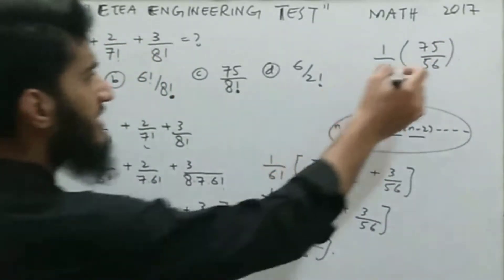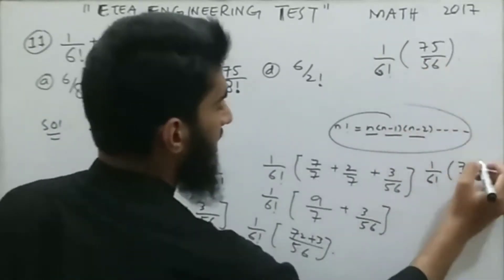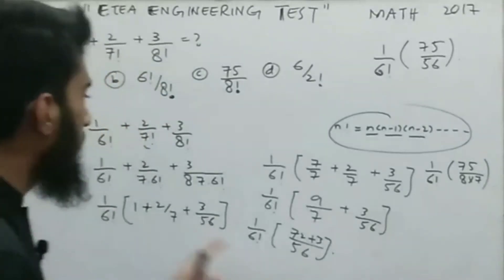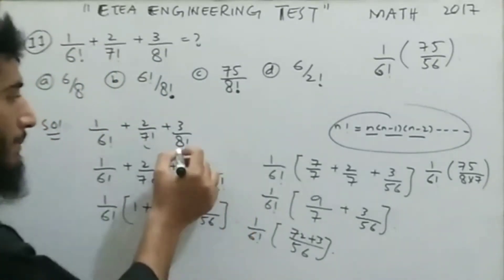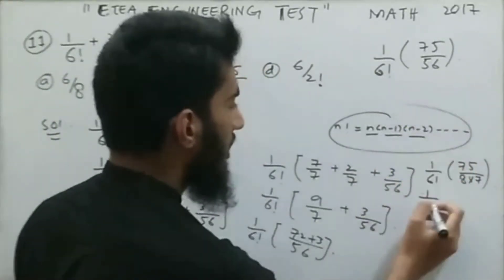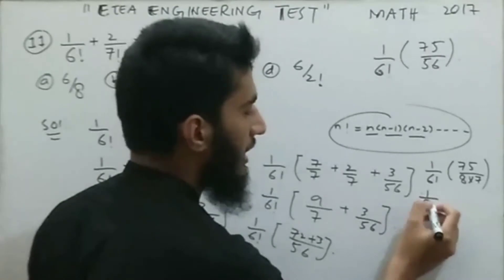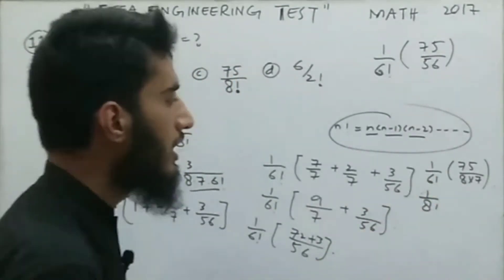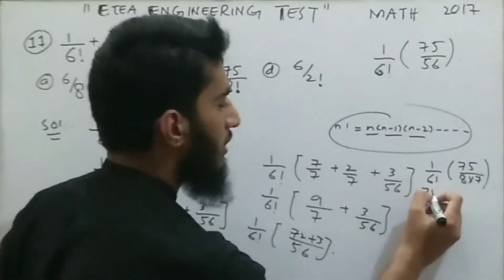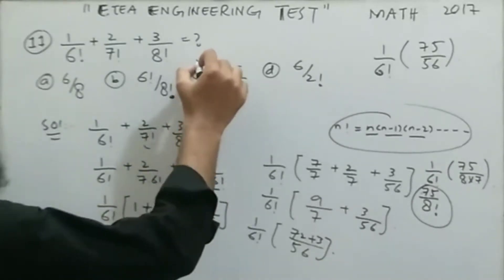Now 56 can be written as 8 × 7, and 8 × 7 × 6! equals 8!. So the expression becomes 75 divided by 8 factorial. Therefore the result for MCQ 11 is 75/8!, and the correct option is option number C.